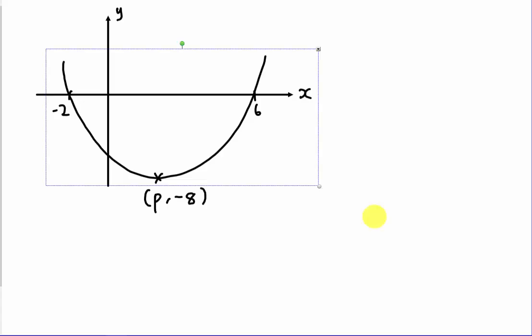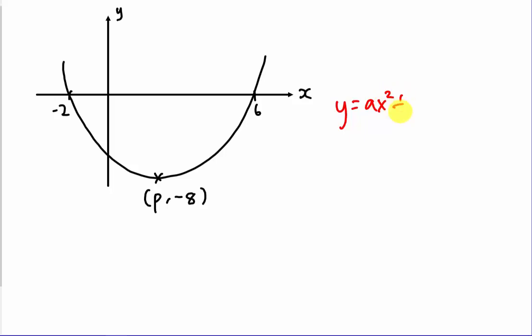The second example is slightly different because you have more information. When you have more information you cannot use the previous method, because in this case the coefficient of x² is not 1. The equation will be ax² + bx + c where a ≠ 1, so we need to find a.